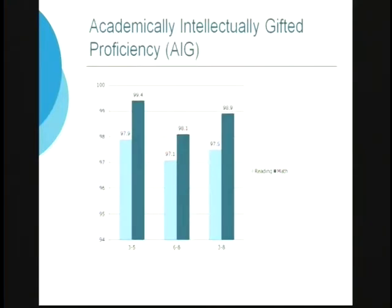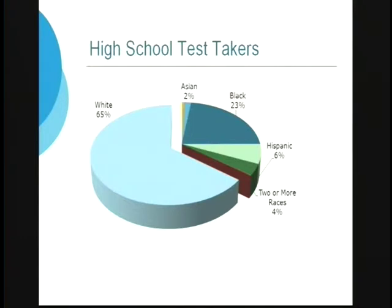For our AIG — academically and intellectually gifted — students, these are the percentages proficient on math and reading assessments. Previously, many identified academically gifted students scored in the low level fours or high level threes, and we've seen a dip because the standard has been raised.